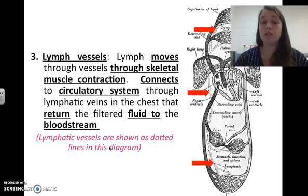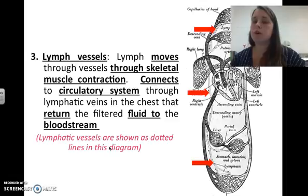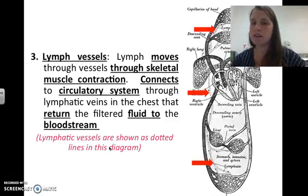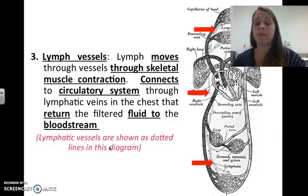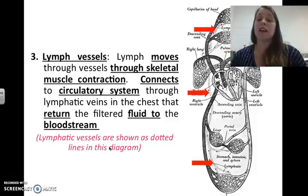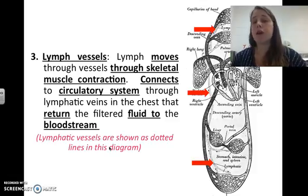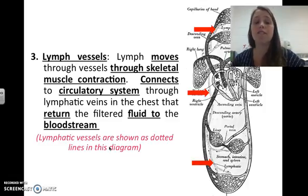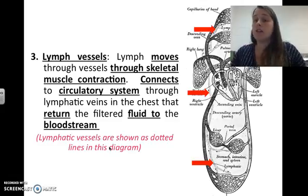Lymph moves through lymph vessels via skeletal muscle contraction and connects to the circulatory system. It connects through lymphatic veins in the chest that return the filtered fluid back to the bloodstream. Mostly it flows through normal blood, but the lymphatic veins route it to lymph nodes to be cleaned before returning to the circulatory system.